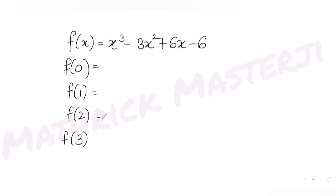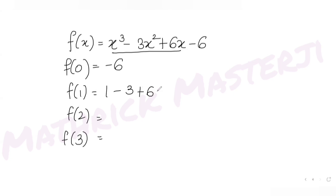For x = 0: all the first three terms become zero, so f(0) = −6. For x = 1: 1 − 3 + 6 − 6 = −2, so f(1) = −2.